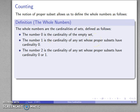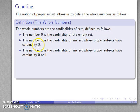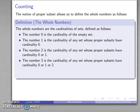If I want to define the number two, I'll define it as the cardinality of any set whose proper subsets have cardinality zero — as defined — or one — as defined. For three, the cardinality is going to be any set whose proper subsets have cardinality zero, one, or two.